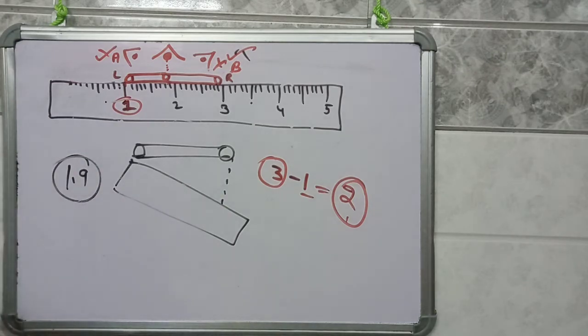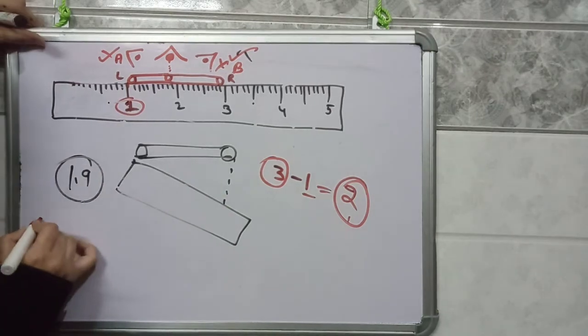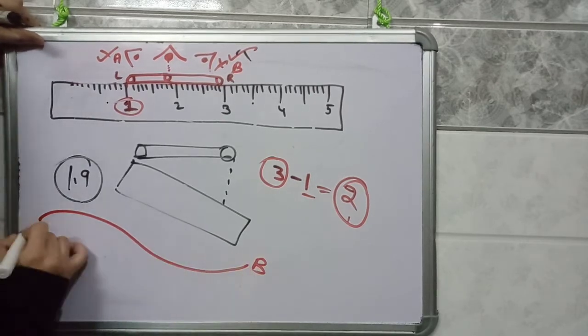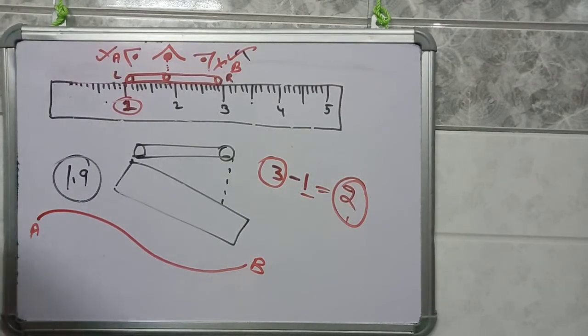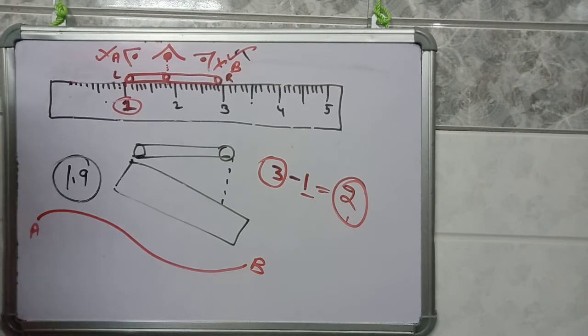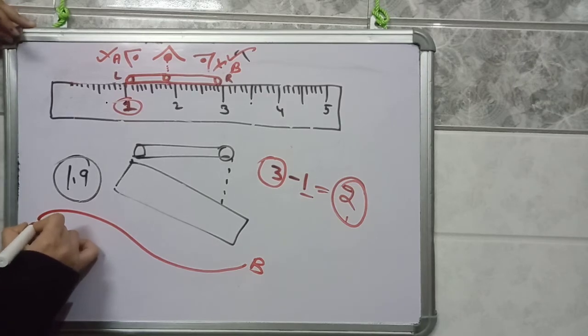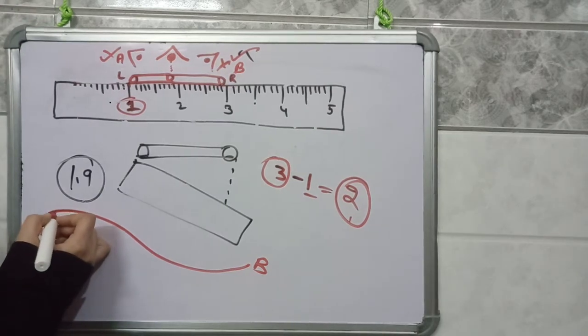Suppose you want to measure the length of this curvy line. How can you measure it? You will take a thread and tie a knot at its one end. So this knot will be the starting point. And then run this thread along this curved length.